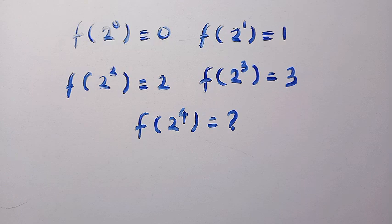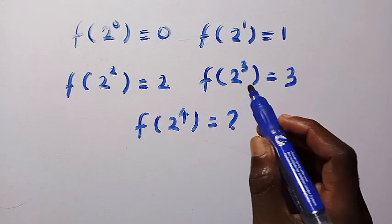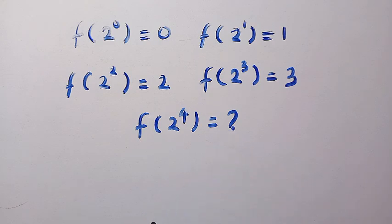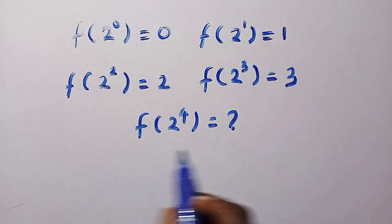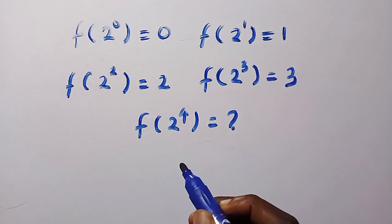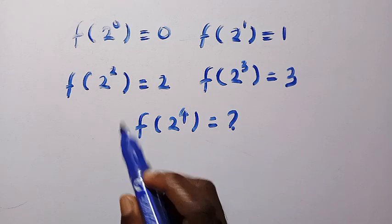Here we have a bunch of functions where the first one is given as f of 2 to the power of 0 equals 0. We have f of 2 to the power of 1 equals 1, f of 2 to the power of 2 equals 2, f of 2 to the power of 3 equals 3. And what is f of 2 to the power of 4? Without any condition, we might guess f of 2 to the power of 4 equals 4 because this follows a trend.